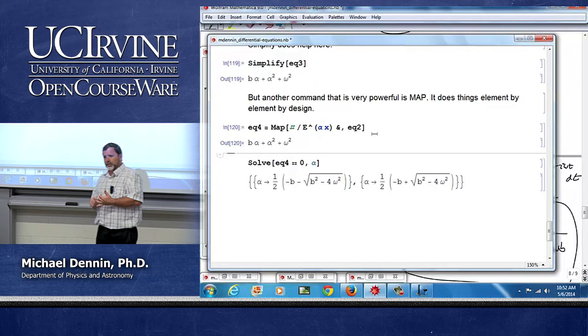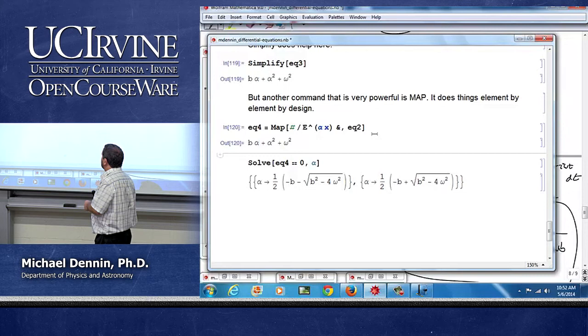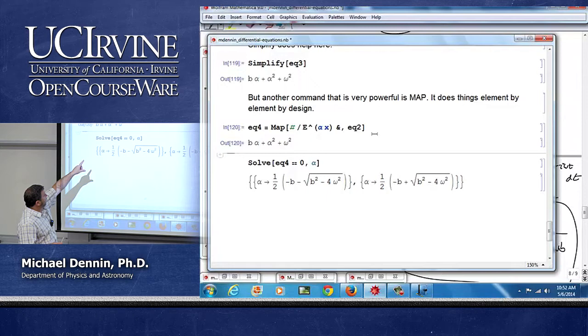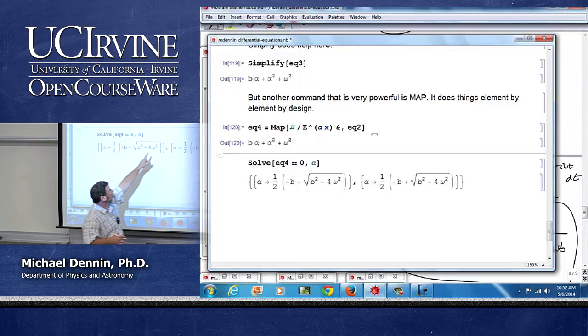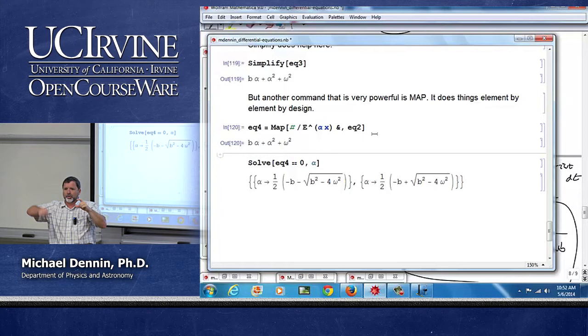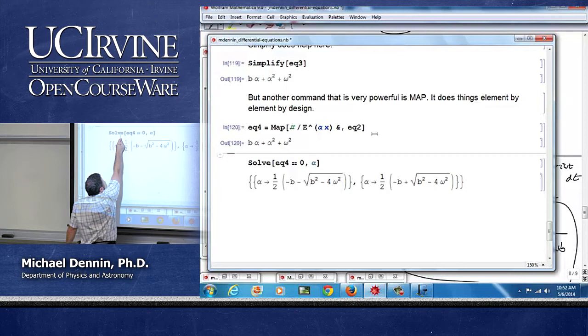That allow you to basically do something term by term in your expression. So you use it for sums, you use it for equations, and you use it for lists. And notice what the structure is. It's this pure function structure again. Map is going to, the pound sign is whatever the input is to that variable. And then it's going to divide it by that, and the ampersand tells me to end it. What is the input? The input is each term in an equation. So what Map does, you want to think literally of it mapping term by term, the function in the left, it plugs into the pound sign each term from the expression on the right input.